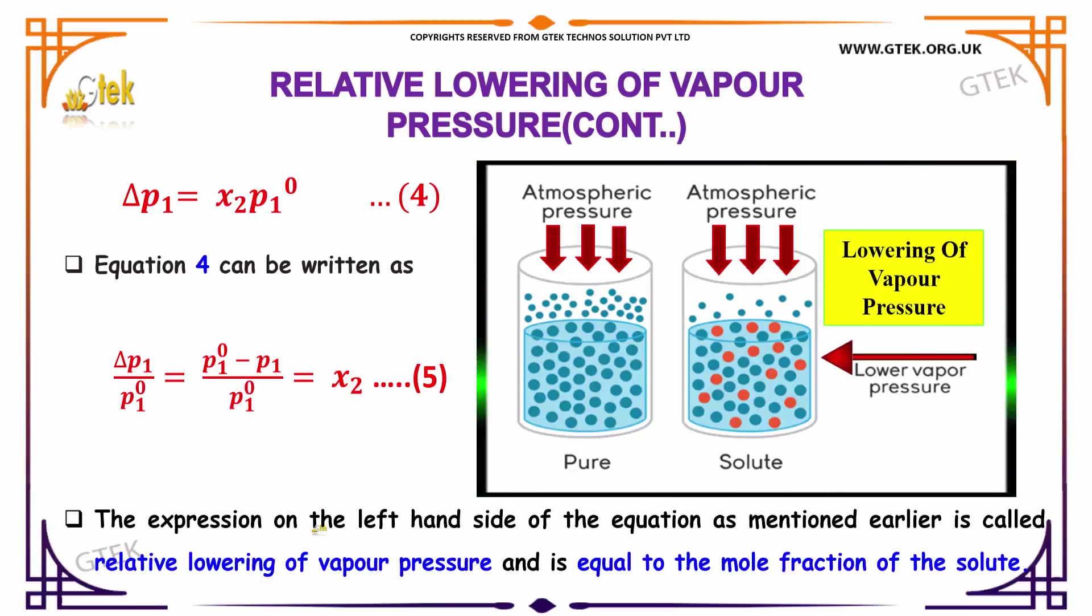The expression on the left hand side of the equation is called relative lowering of vapor pressure, and it is equal to the mole fraction of the solute.